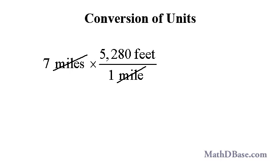For example, to express 7 miles in terms of feet, we can make use of the fact that there are 5,280 feet per mile, which is the conversion factor, and write 7 miles times 5,280 feet per mile. The miles cancel, leaving feet in the numerator, then we multiply 7 by 5,280 to get 36,960 feet.